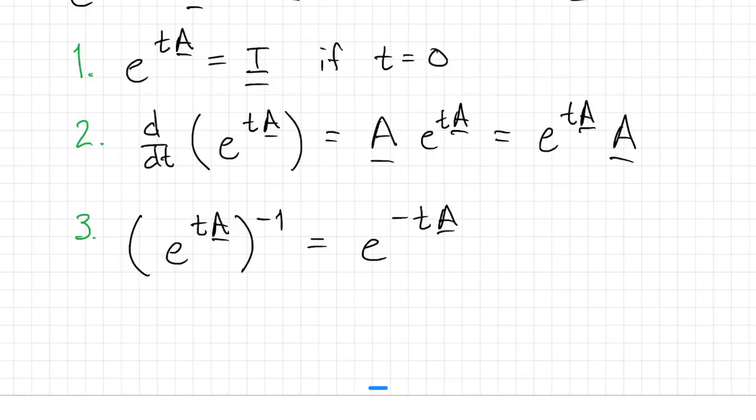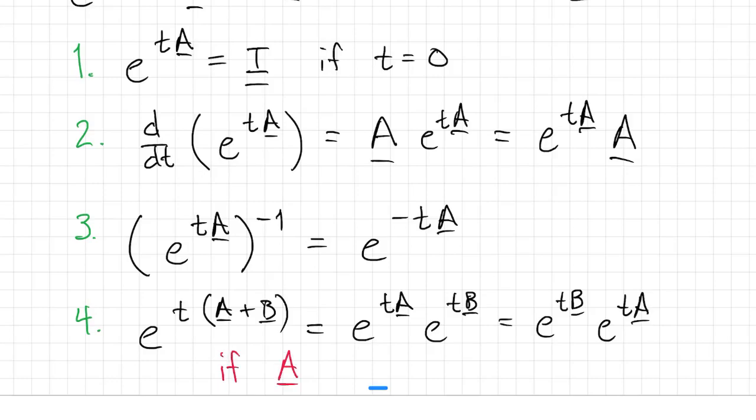And then there's a fourth thing that we want from exponentials that we almost get. The exponential of a sum is the product of the exponentials in either order, but only if a condition is met. A times B has to equal B times A in order for this to be true.